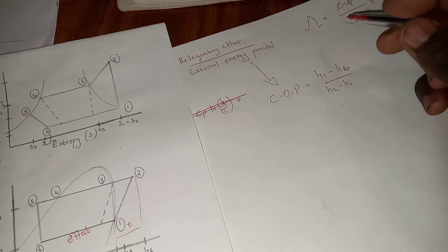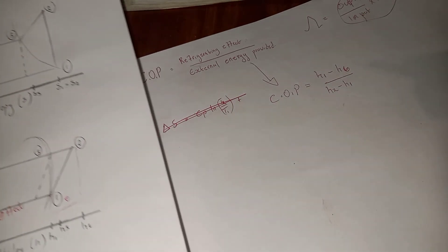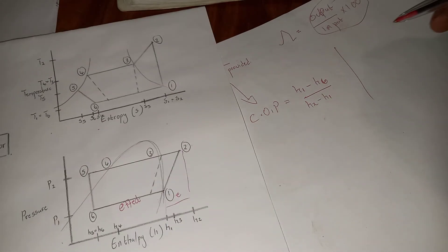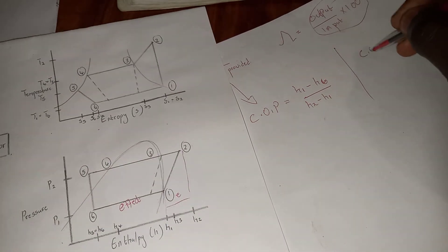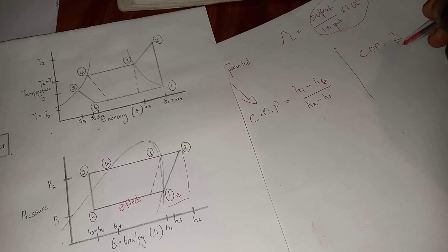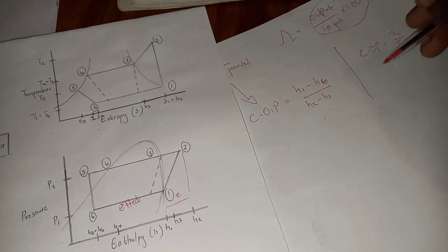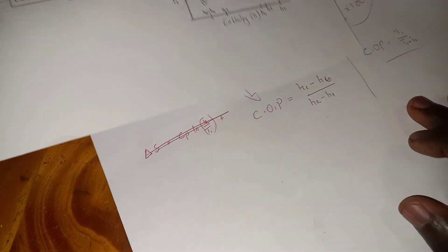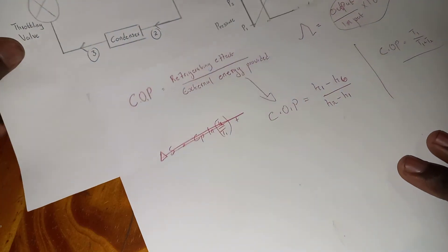Note that this formula is not for an ideal refrigeration system. For an ideal refrigeration system, the coefficient of performance would be: COP_ideal = T1 / (T1 + T2), where T1 and T2 are the relevant temperatures.